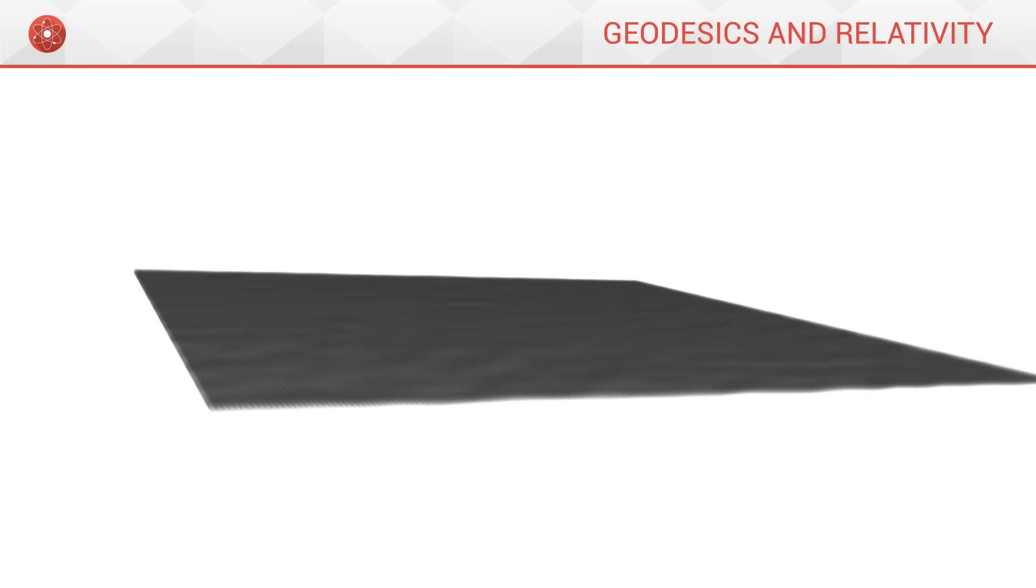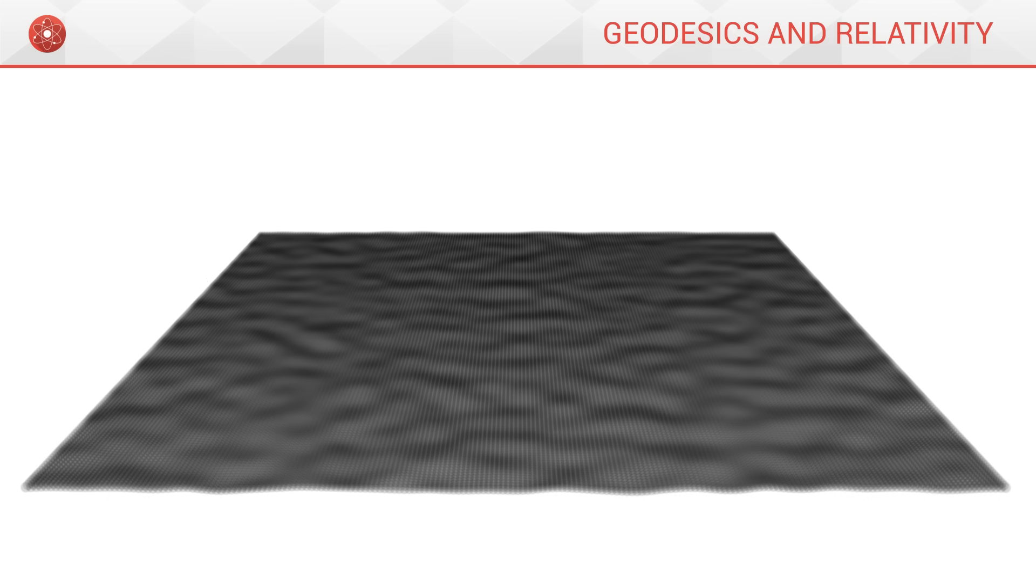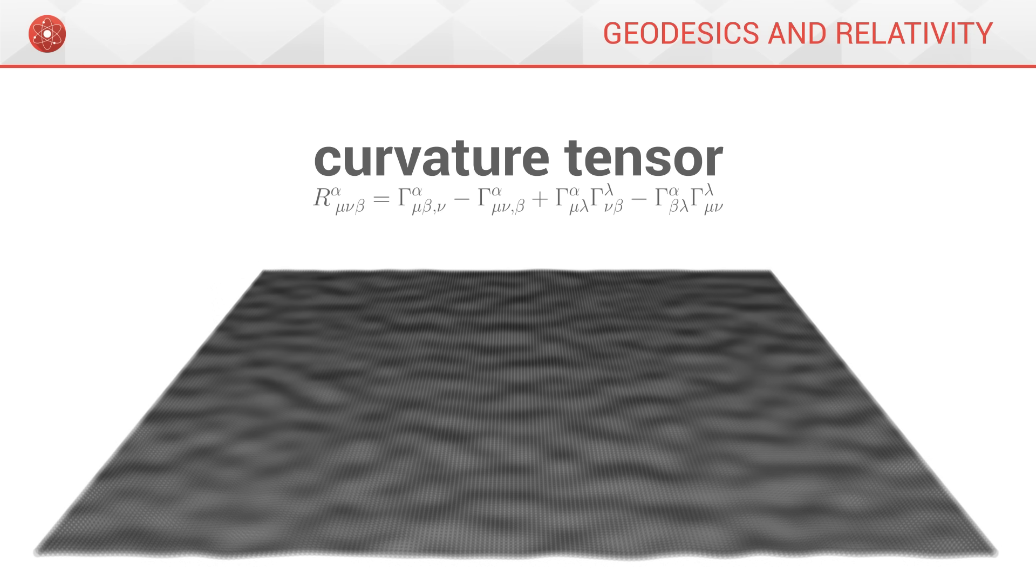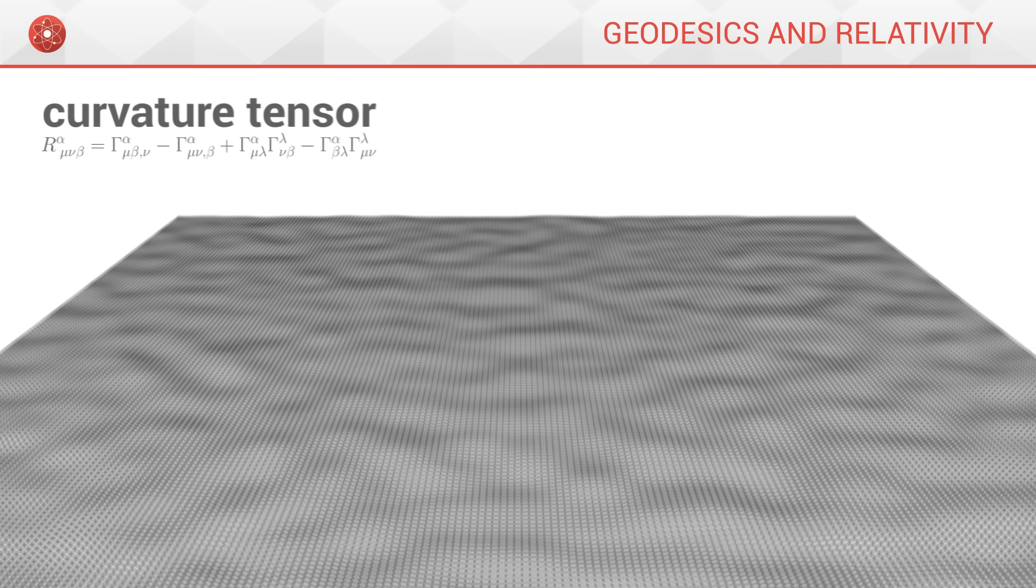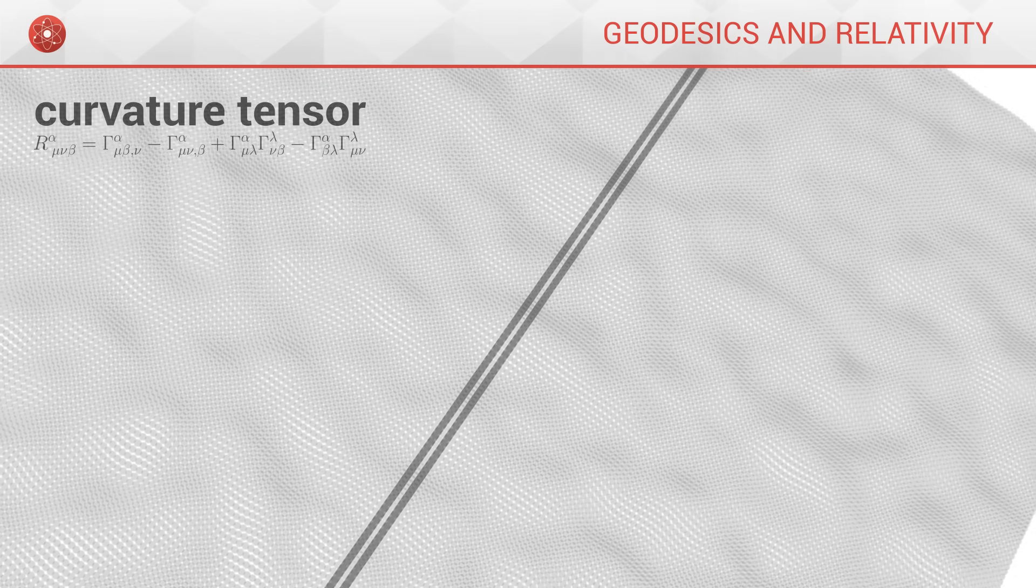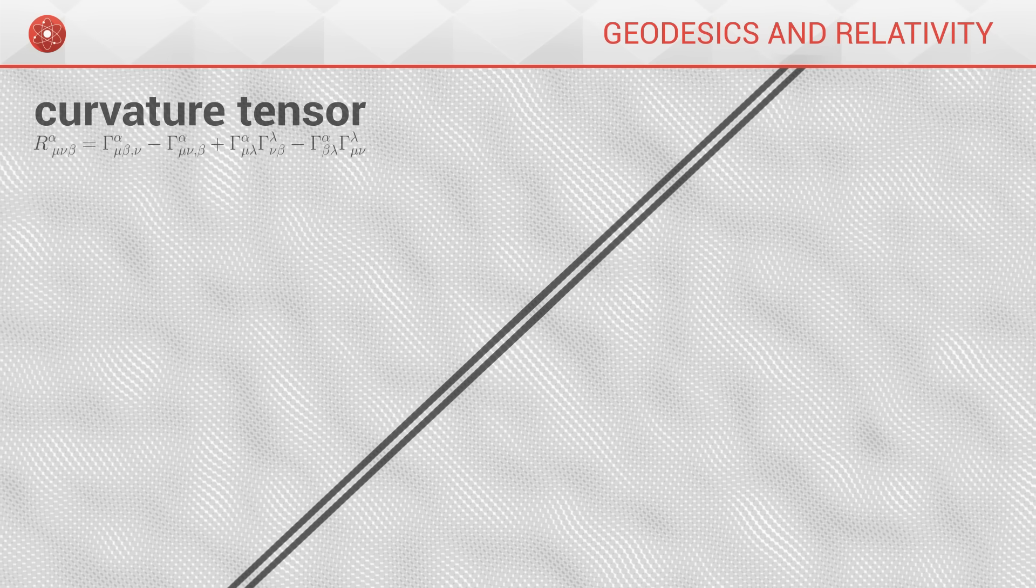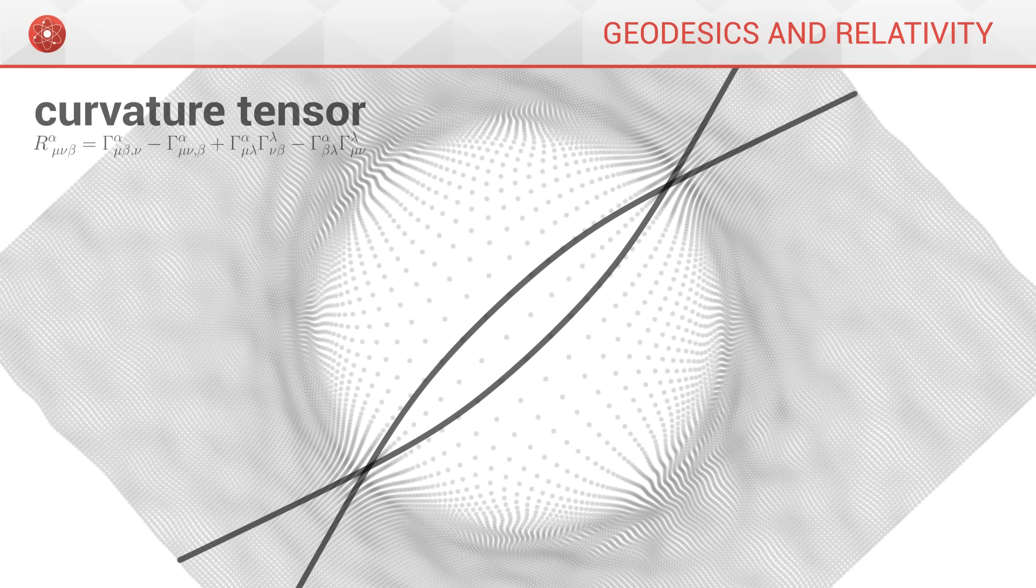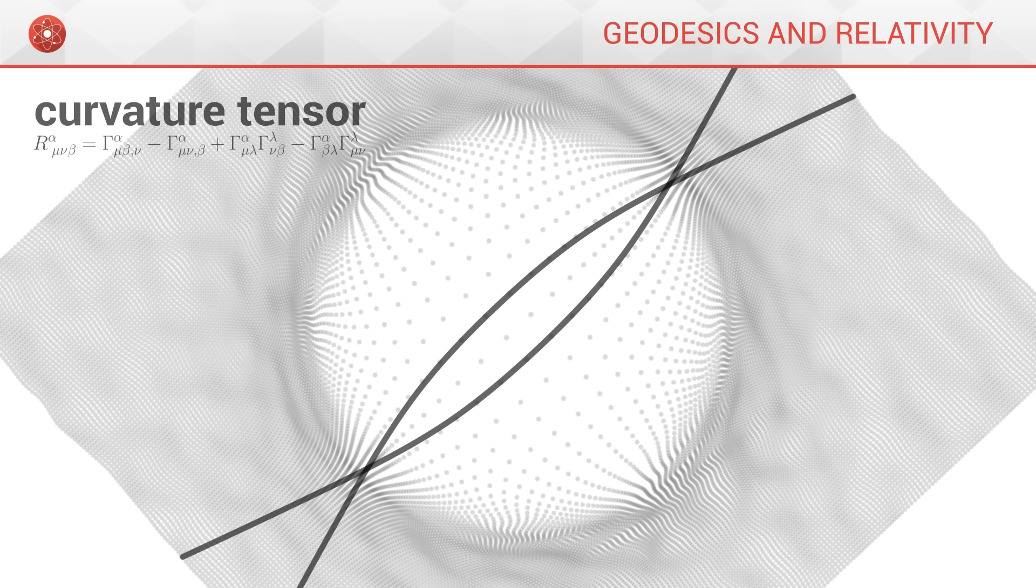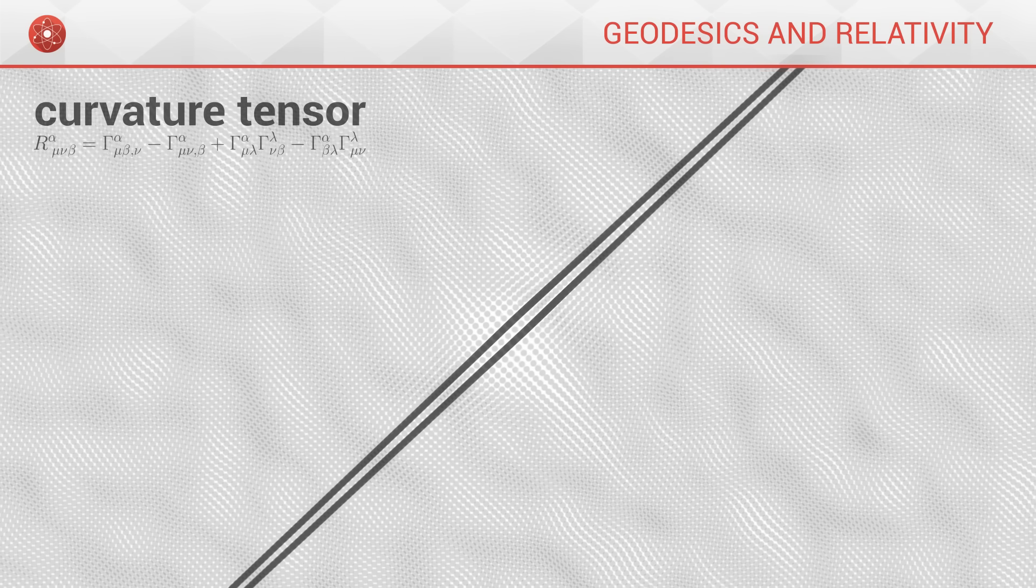The field of differential geometry has developed a whole variety of tools to characterize the curvature of a surface. One of the most important tools is the so-called curvature tensor. It is an object which expresses how geodesics evolve compared to each other. It measures the curvature of a geometry because the more curvature there is, the faster the geodesics will converge or diverge from each other. And conversely, the flatter the surface, the more its geodesics tend to stay parallel to each other.